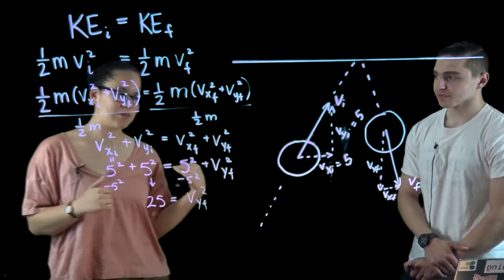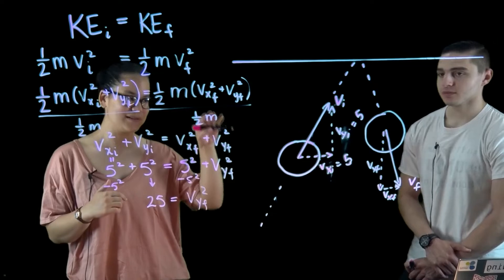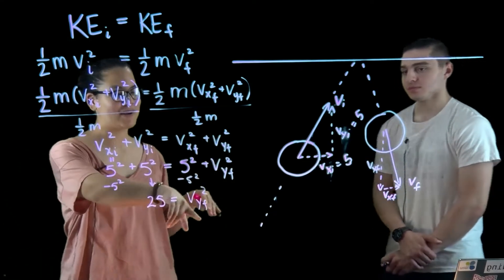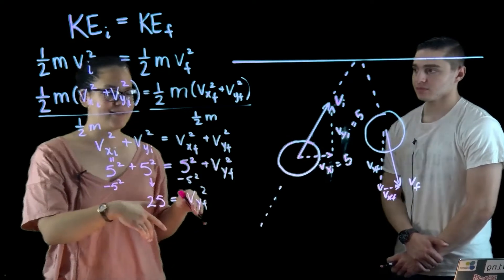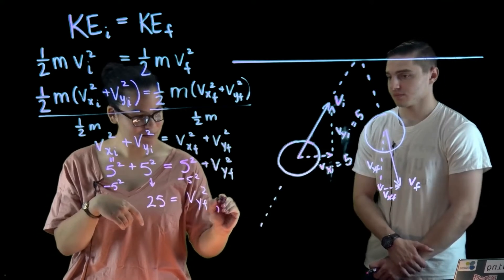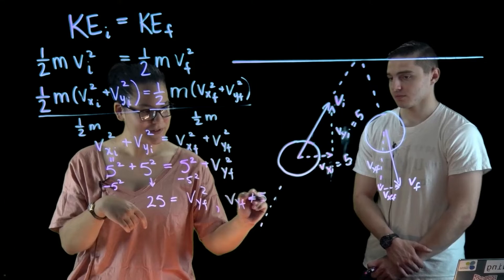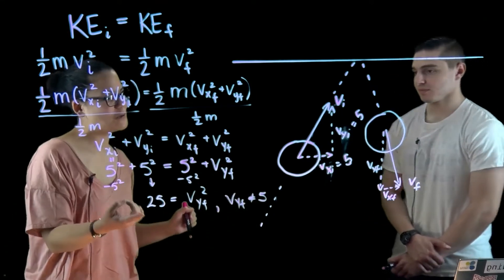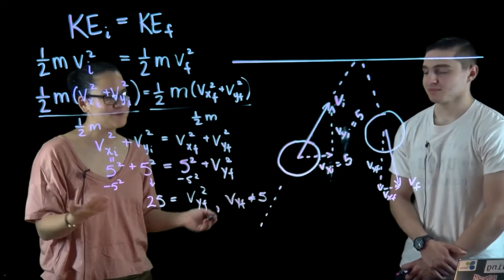But because that force is applied in the y direction, the ceiling is pushing down on the blob, this y component has to have changed because of that force. So VYF is not equal to 5. But VYF squared is still equal to 5 squared. So what could VYF be?